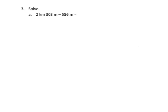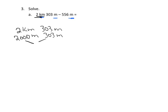Now we're going to use those equivalent measures in order to subtract. The key thing to notice is that we have different units — kilometers and meters — so we can't just subtract the plain numbers. We have to think about the units. One way to solve this is to take the two kilometers and convert them into meters: 2 kilometers equals 2,000 meters, plus the original 303 meters, giving us 2,303 meters. Now we can subtract the 556 meters, because we have meters and meters.